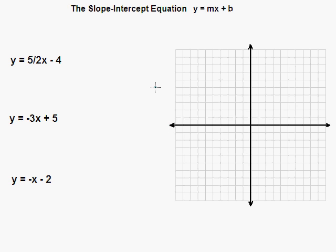Today, we're going to talk about the slope-intercept equation. The slope-intercept equation is y equals mx plus b. This equation is what we use to help us graph lines.